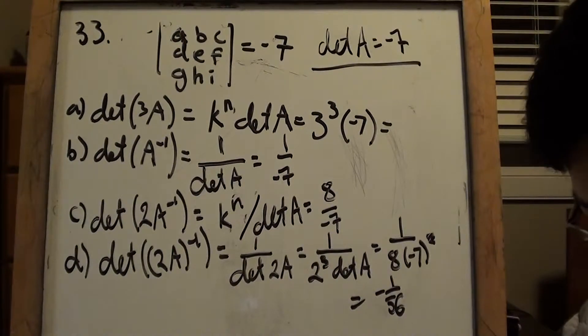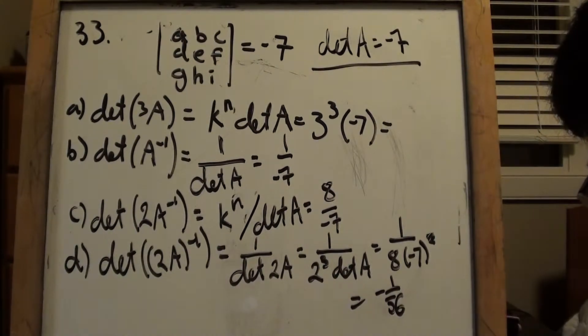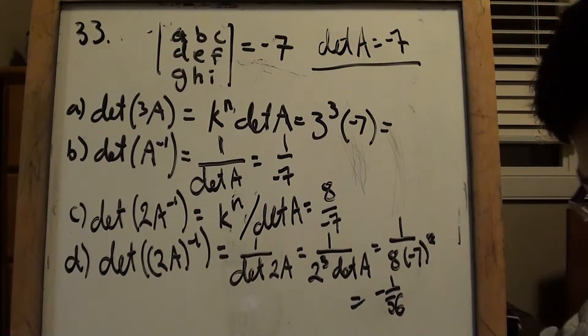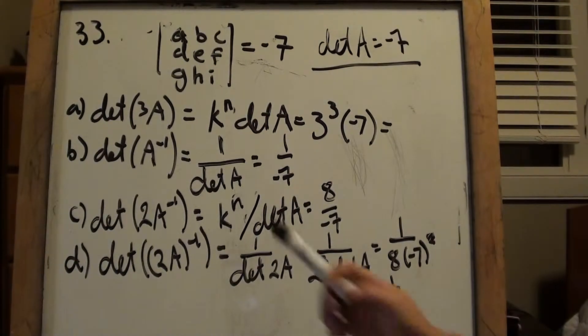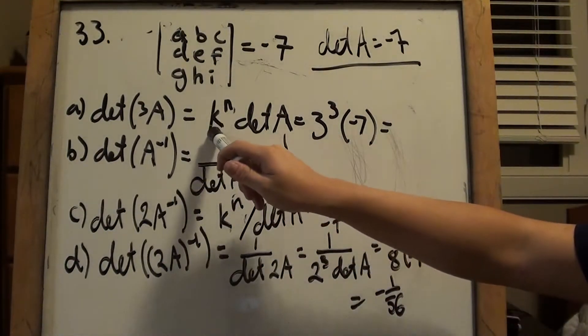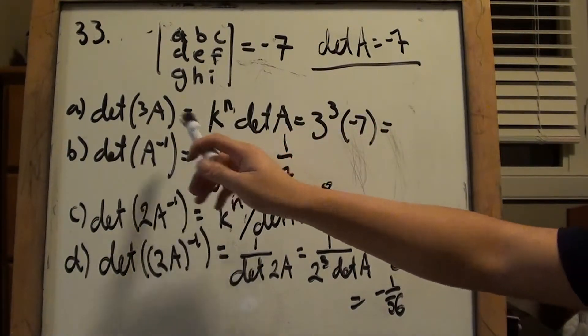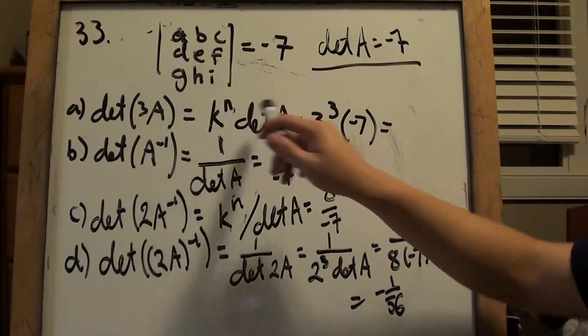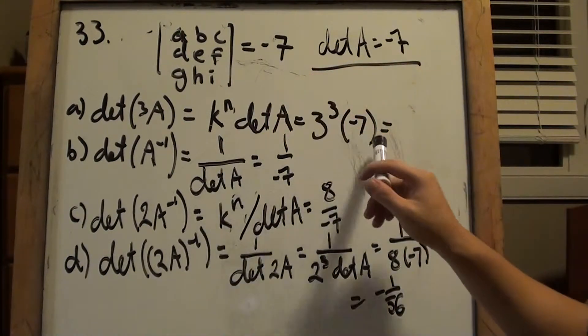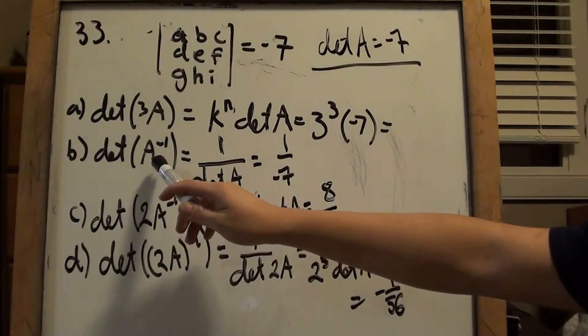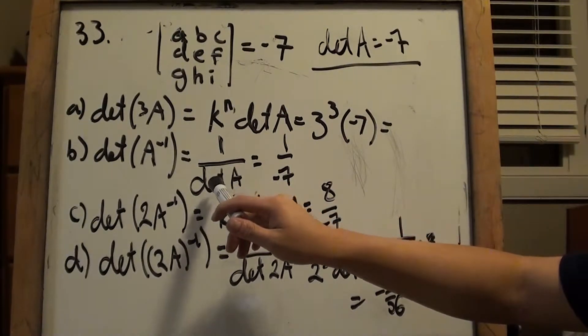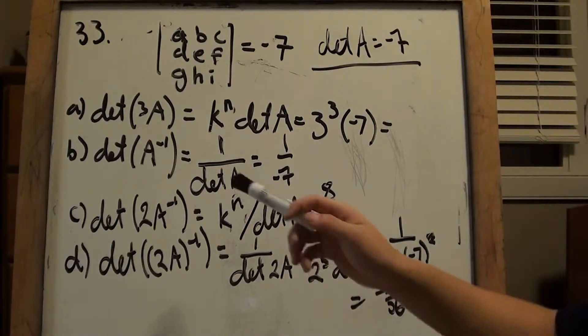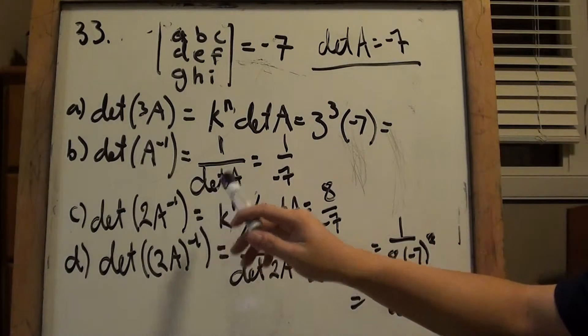So because of that, now it's asking what delta 3A is. If you remember, I think that was on the first section. So identify delta kA equals to k^n delta A. So those were questions 1, 2, 3, 4 that we were working on. So just follow the formula. So k is going to be, in this case, k is going to be 3. The n is the size of the matrix, which happens to be 3. So 3 to the 3, delta A, we already know, they gave it to us, done.